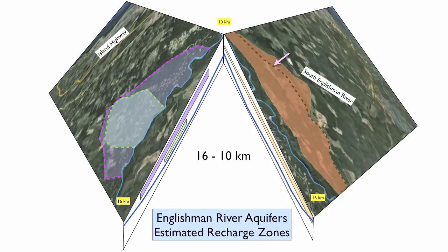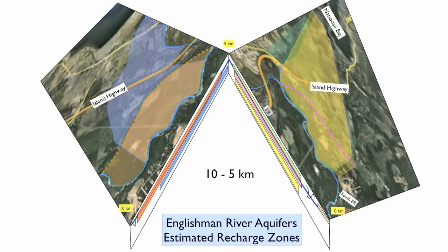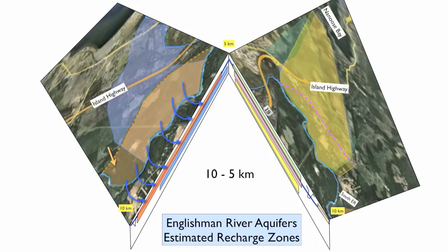On the right bank, the boundary of the recharge area does not correspond to the footprint of the aquifer because there is a divide. Water droplets falling left of the divide will end up in the Englishman River; the ones falling on the right side will end up discharging into the South Englishman River. As we move down the river, between 10 km and 5 km from the foreshore, the sequence of aquifers is more complex. On the left bank, the whole footprint of the upper aquifer, colored in orange, participates in the generation of groundwater discharging into the Englishman River. On the right bank, the aquifers have a large footprint and only a small portion of them will act as a recharge zone for groundwater discharging to the Englishman River.